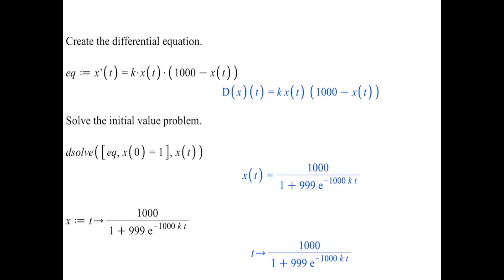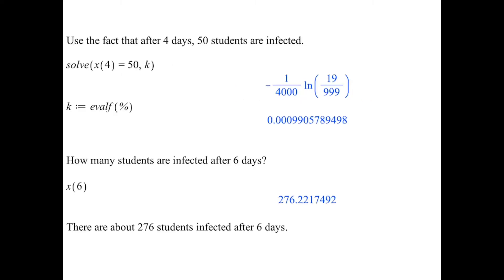We just give them code. They're coming up with the idea of the differential equation: that the change in X with respect to time is proportional not only to X, the number of people who are infected, but also to 1000 minus X, the number of people who are not infected. We give them the code to solve the initial value problem and analyze it.